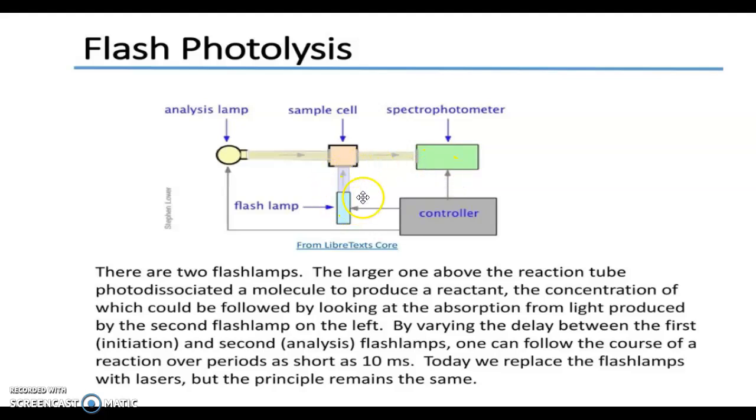There are two flash lamps here we are using. The larger one above the reaction tube photodissociates a molecule to produce a reactant, the concentration of which could be followed by looking at the absorption from light produced by the second flash lamp on the left. By varying the delay between the first (initiation) and the second (analysis) flash lamps, one can follow the course of a reaction over periods as short as 10 milliseconds.